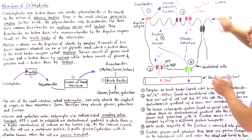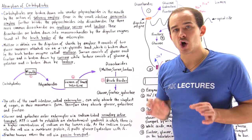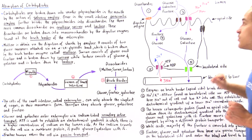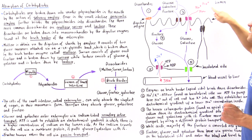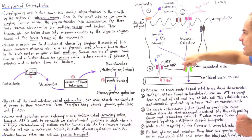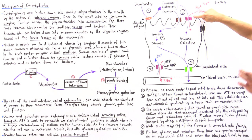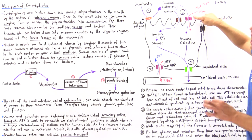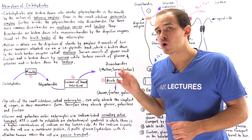On the outside — the lumen side — we have a higher amount of sodium. Because we have a higher amount of sodium on the lumen side, the sodium will travel into the cell via a special type of co-transporter protein.